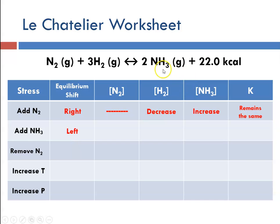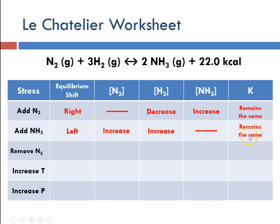If we add ammonia, we're going to shift it to the left toward reactants. That means our reactant concentrations would increase. The Keq is not affected by changes in concentration.